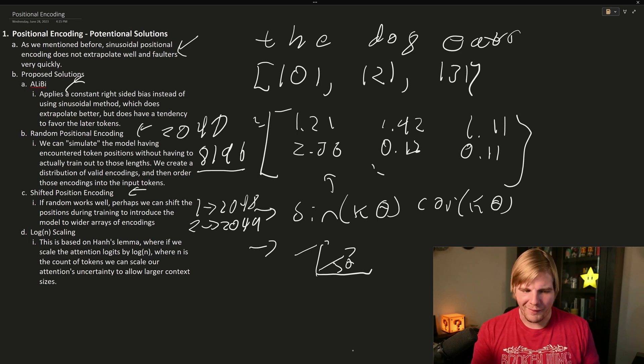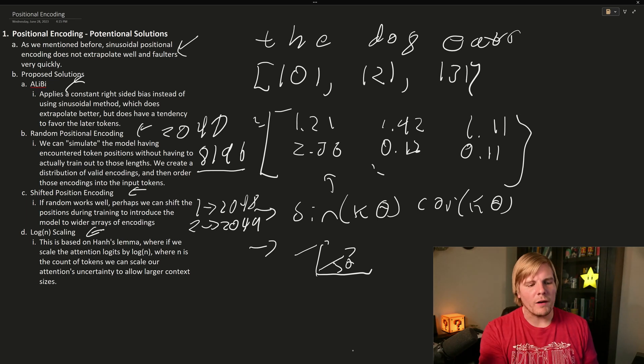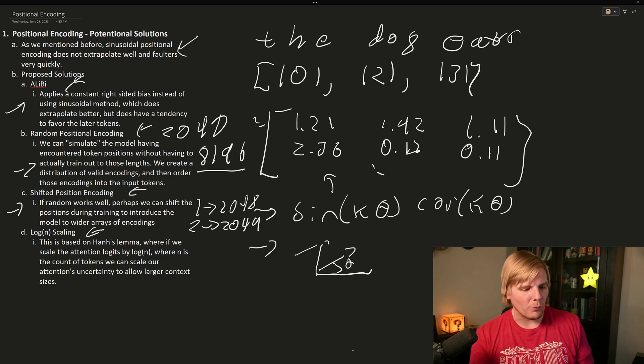But we'll get to that in the next section as well. But then we have log scaling, where we're not actually attacking the positional encoding directly. Rather, we're scaling the output from attention. And this allows us to prevent the model from over favoring the encodings that it has already seen. But it's not as powerful as the other methods were. But for the sake of completeness, I thought we should cover it at least a little bit. But now let's move on to rotary encodings and the power behind those.